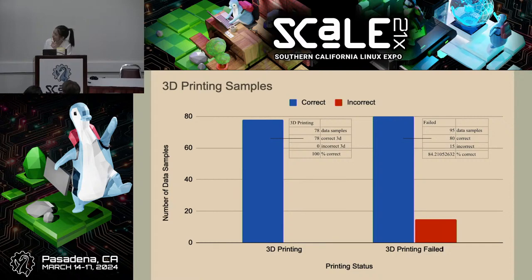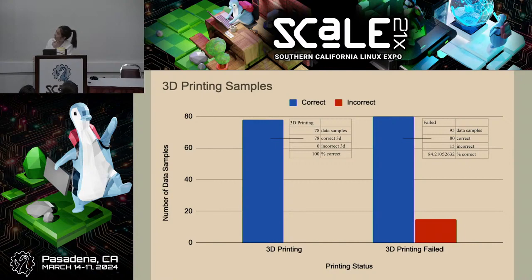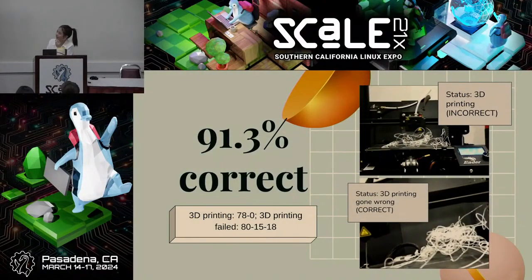Here are my results. For 3D prints I purposely made successful, 78 out of the data samples were correctly predicted as printing successfully. For prints I purposely failed, I had 95 data samples and 80% were correctly detected as failures, but there were 15 incorrect detections and a few corrupted files. In general, the model achieved a 91.3% accuracy rate.